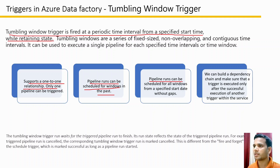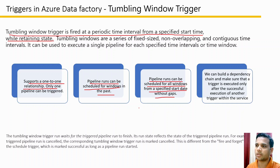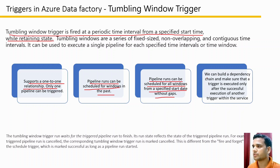The third feature is that pipeline runs can be scheduled for all windows from a specified date without any gaps. If we set up a pipeline to execute every one hour from a past date, it will continue executing the pipeline at every hour-long window without missing or skipping any time slot.